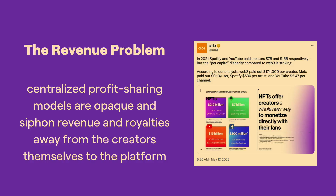There's a bunch of different problems with content apps today. The first one is the revenue problem. There are centralized profit sharing models that are pretty opaque, and they siphon revenue and royalties away from actual creators and keep them on platforms themselves. Web3 paid out $174,000 average per creator in 2021 — compare that to Meta paying out 10 cents a user, Spotify $636 an artist, and YouTube $247 per channel. That's a really big difference.